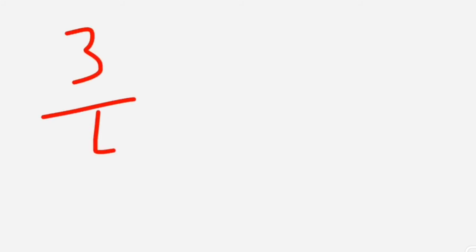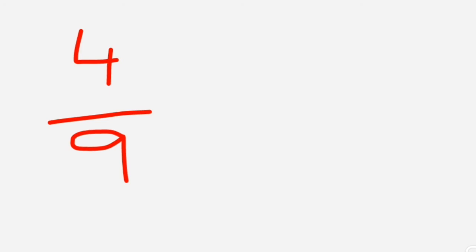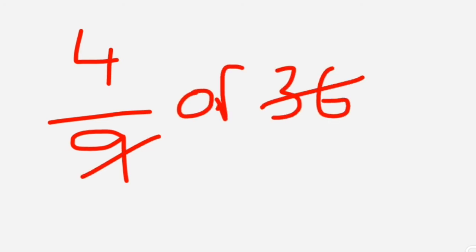Trick nine: fraction of a number. 3/4 of 24 — 4 goes into 24 exactly 6 times, so 6 times 3 is 18. Answer is 18. Another example: 4/9 of 36 — 9 goes into 36 four times, so 4 times 4 is 16. Answer is 16.